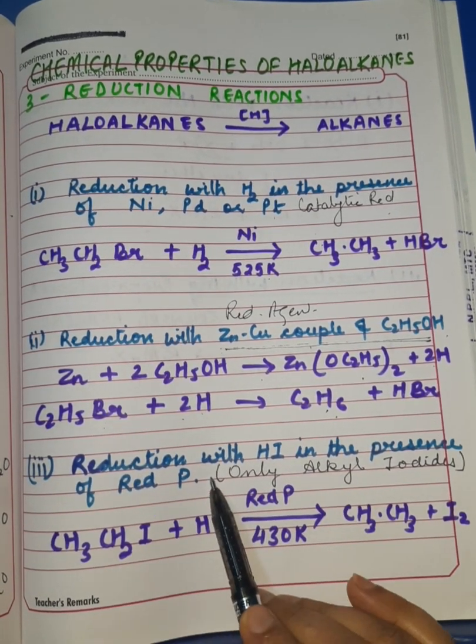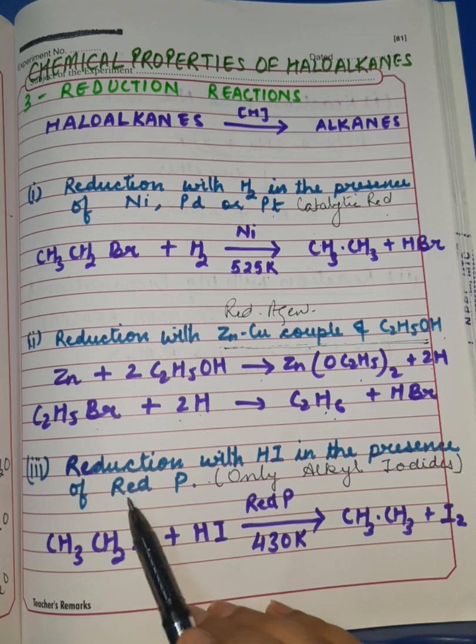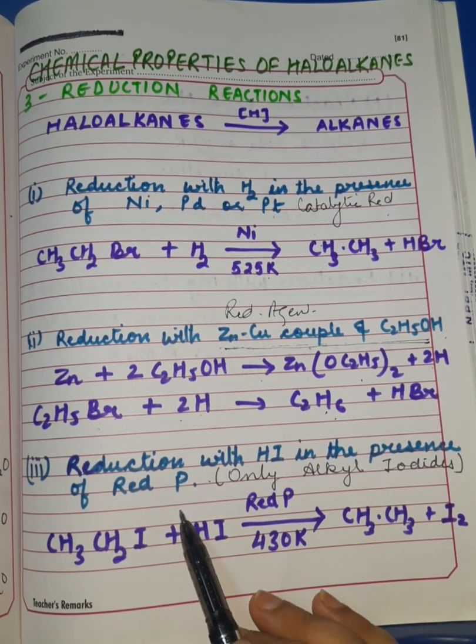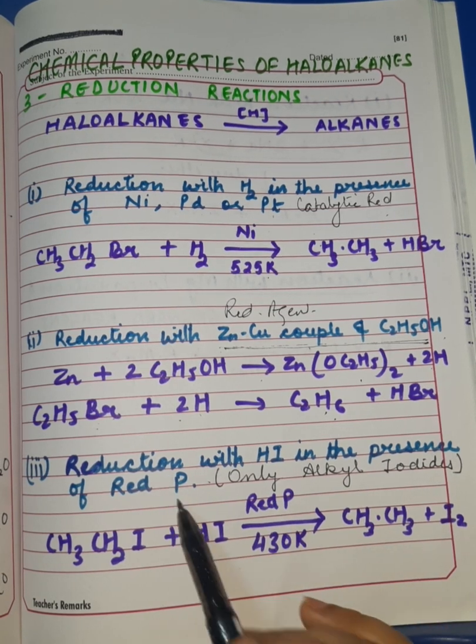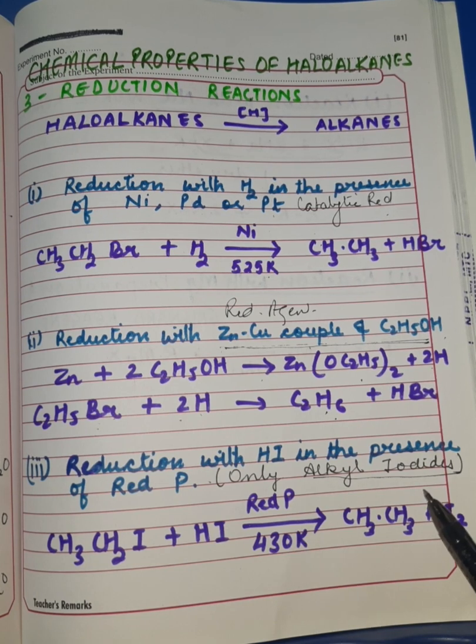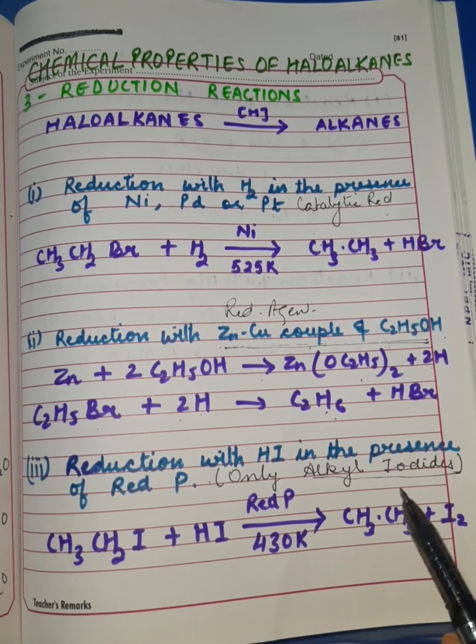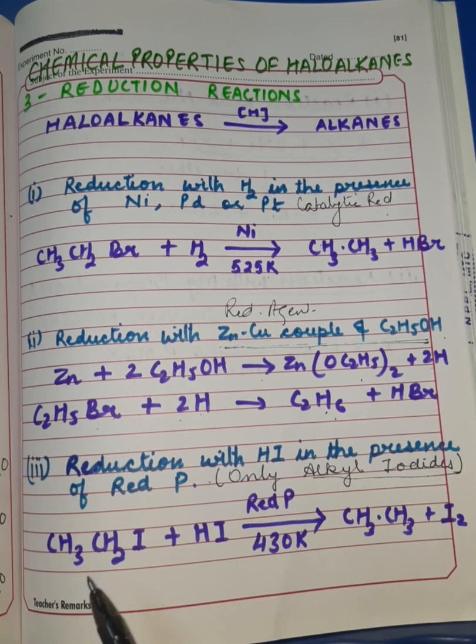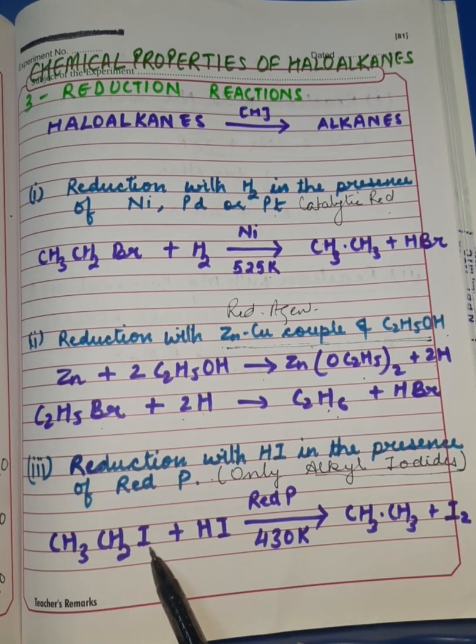The third way of reduction is reduction with HI in the presence of red phosphorus. This reaction is a restricted reaction. Why? Because through this reaction we can only reduce alkyl iodides, not alkyl chlorides and not even alkyl bromides—only alkyl iodides. Remember this.